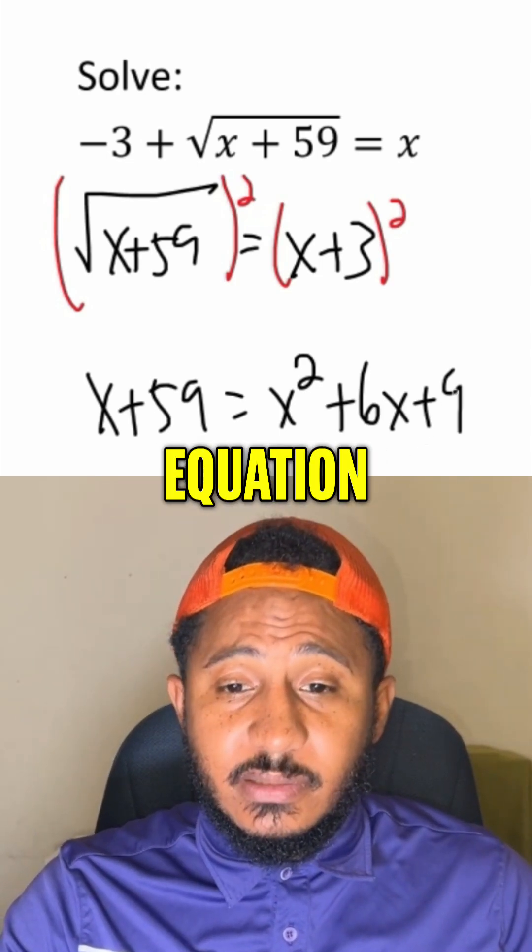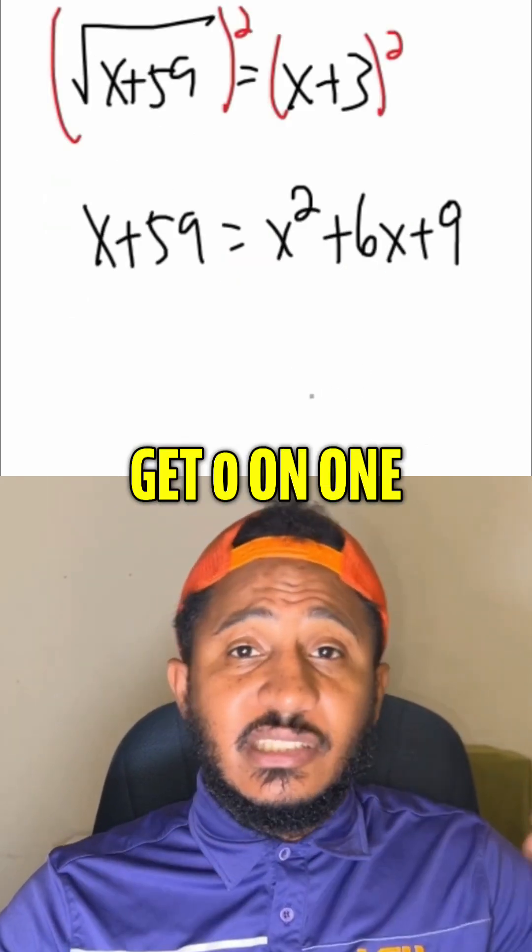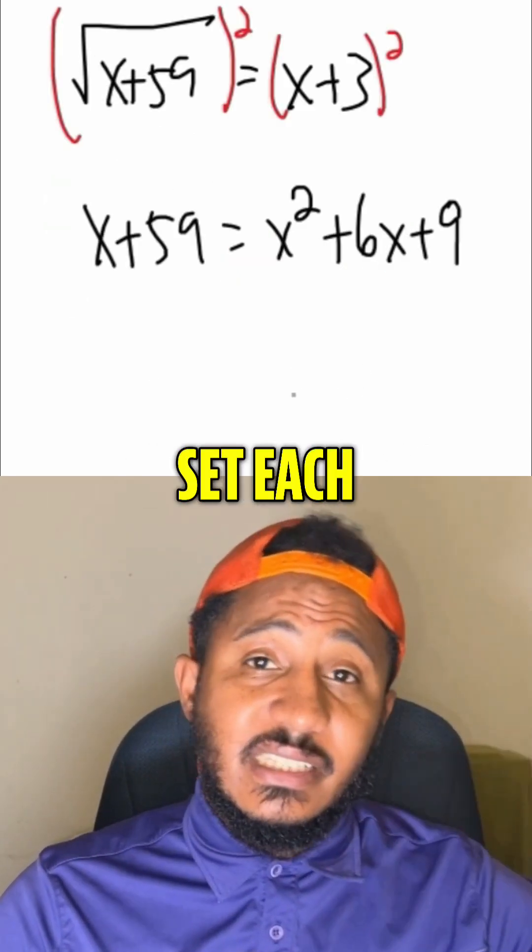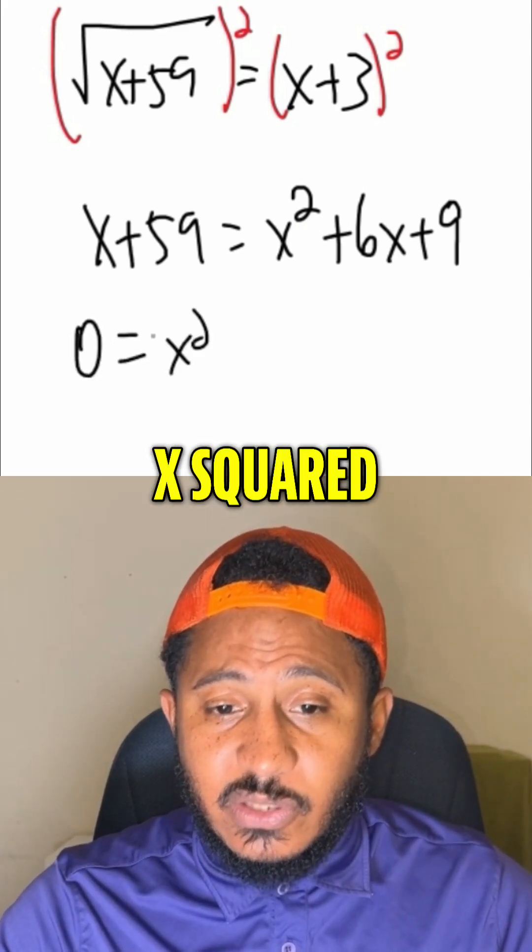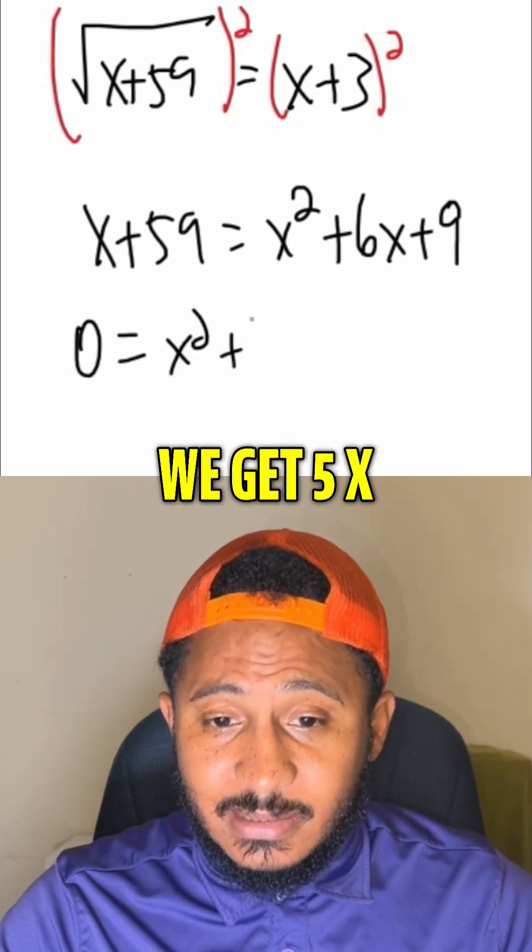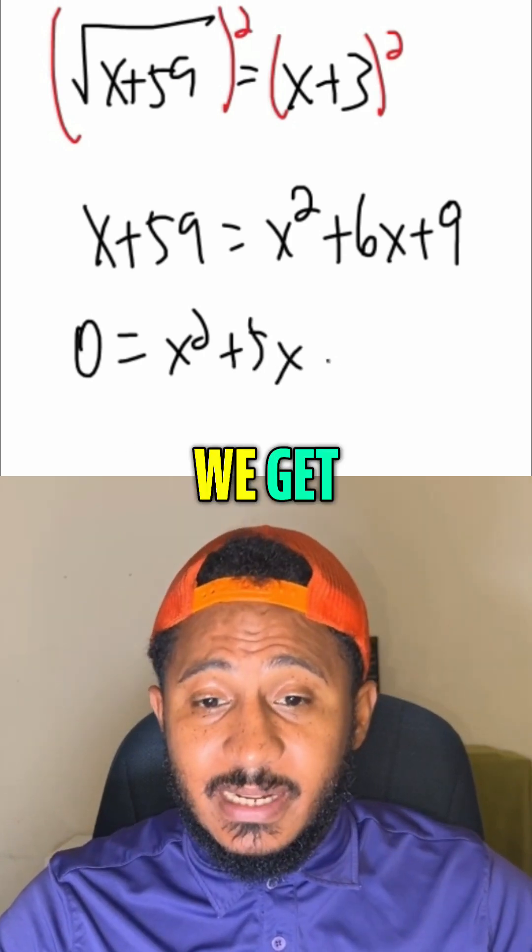Now it's a quadratic equation, and how we solve quadratic equations, get zero on one side, factor the other side, set each factor equal to zero. So here we get zero equals x squared. Subtracting x, we get 5x, and subtracting 59, we get negative 50.